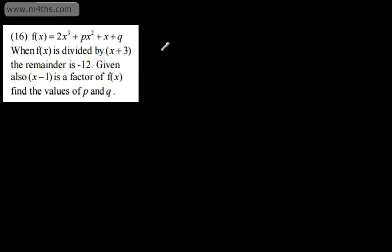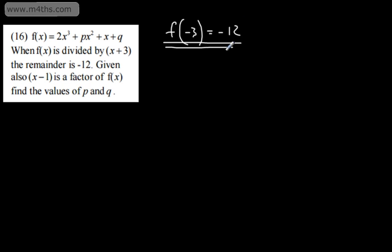In question 16, f(x) equals 2x cubed plus px squared plus x plus q. When f(x) is divided by x plus 3, the remainder is negative 12, so f(-3) equals -12. That is my first statement. Given also that x minus 1 is a factor of f(x), by the factor theorem f(1) equals 0. These two statements will give us two different equations that we can solve simultaneously for p and q.